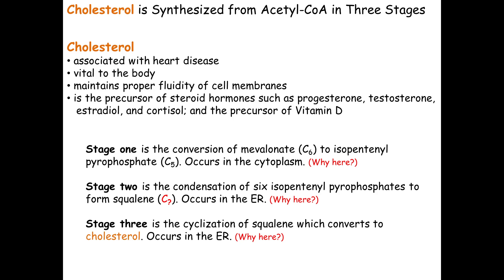The cholesterol has some modifications done on it: we're going to get an OH at carbon number three, and the long tail on the end may become a carboxyl group depending on what we're going to turn the cholesterol into. The core has 17 carbons, and then there are 10 more carbons in that tail structure and methyl groups. This also occurs in the ER because it's still not soluble in water.